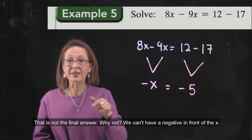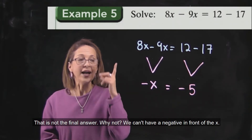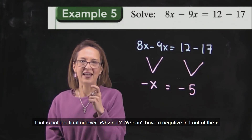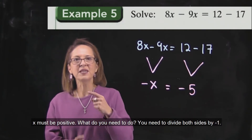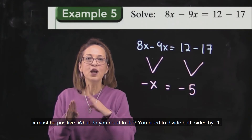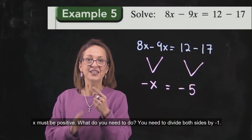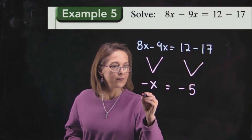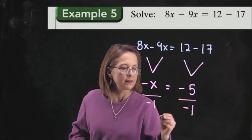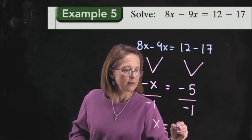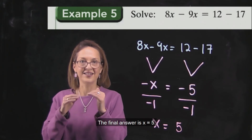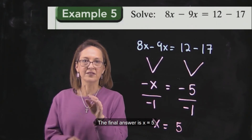That one is not the final answer. Why? We can have negative x — x must be positive. What to do? We need to divide by negative 1. Final answer, x equals 5.